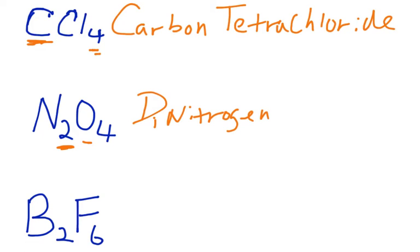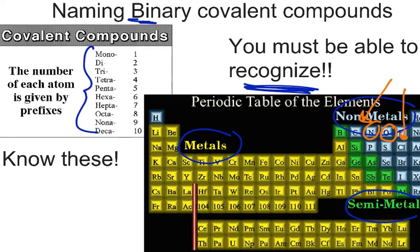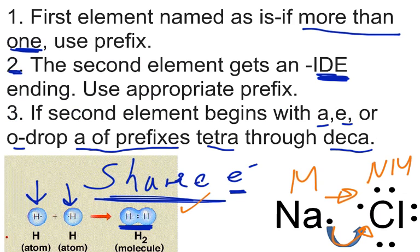Instead of putting tetraoxide down, we have to drop the 'a' of the tetra based on rule number three. So what's going to happen is the 'a' of the tetra will be dropped.